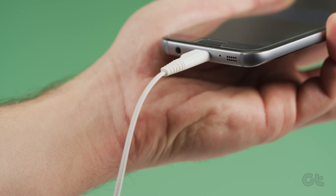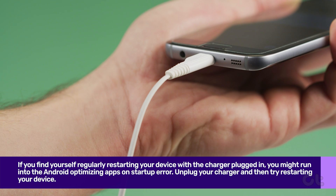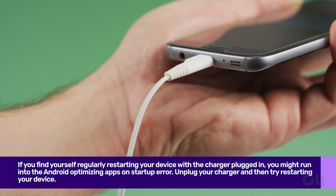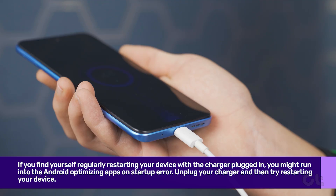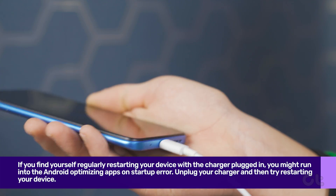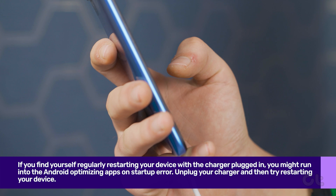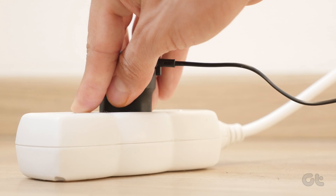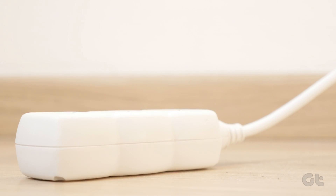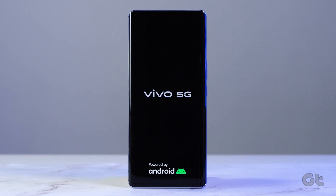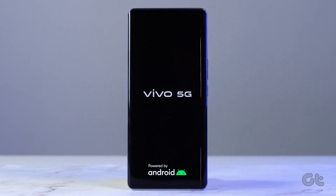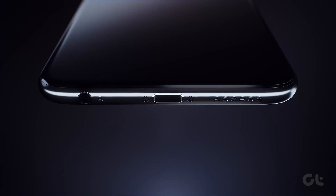Finally, if you find yourself regularly restarting your device with the charger plugged in, you might run into the Android Optimizing Apps on startup error. Take a moment to give your charger a break, unplug it, and then restart your smartphone. These fixes will work like magic to solve the issue for you. Don't miss out on more tech tips.